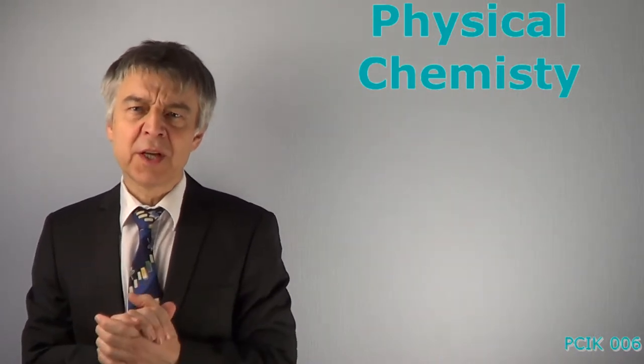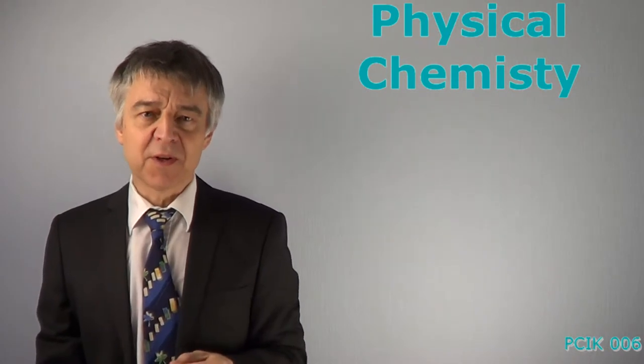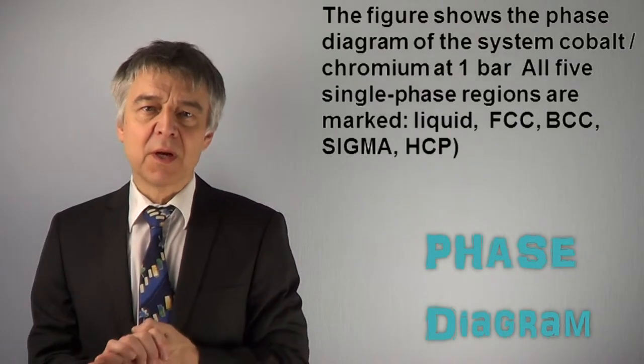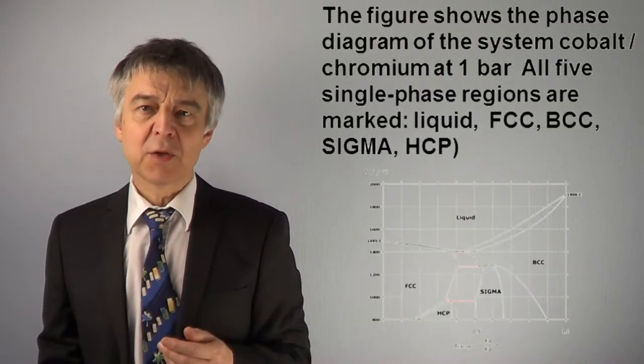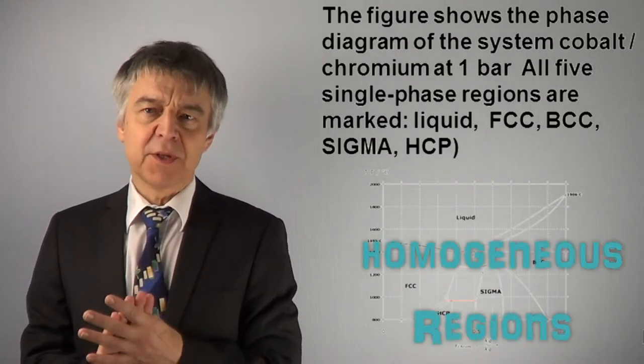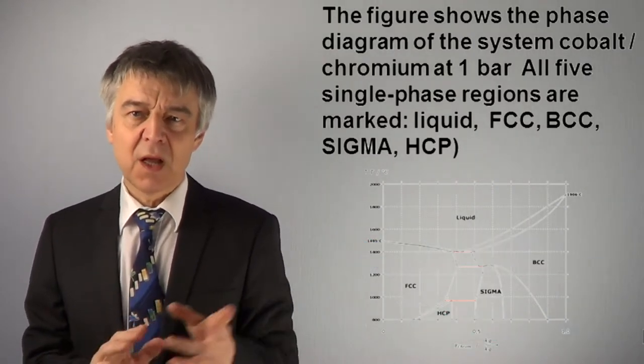In this exam question it comes to phase diagrams with invariant points. The figure shows the phase diagram of the system cobalt-chromium at one bar. All five single-phase regions are marked: liquid,